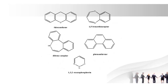Next one is thioxanthene. It is the same as xanthene but the oxygen in the xanthene ring is replaced by sulfur. Next one is 1,5-benzothiazepine. 'Benzo' stands for benzene ring, 'thia' stands for sulfur, and 'az' stands for nitrogen. The 1,5 denotes the positions of sulfur and nitrogen. The drugs diazepam and oxazepam contain the 1,5-benzothiazepine ring.